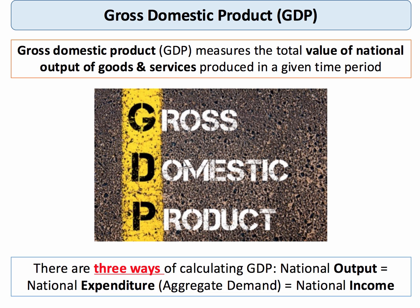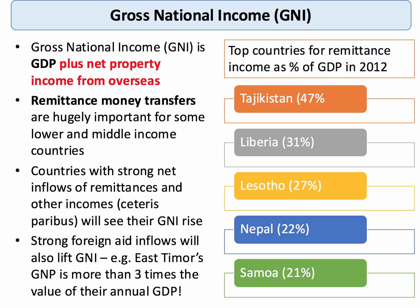The key point is that GDP is the value of output within the geographical boundaries of a country. Gross National Income is similar to GDP but with a simple adjustment: GNI is GDP plus the net income from external sources in the economy.